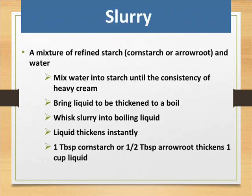Slurry is a mixture of refined starch — cornstarch or arrowroot — and water. Mix water into starch until the consistency of heavy cream. Bring the liquid to be thickened to a boil and whisk the slurry into the boiling liquid. The liquid thickens instantly. One tablespoon cornstarch or half a tablespoon arrowroot thickens one cup of liquid.